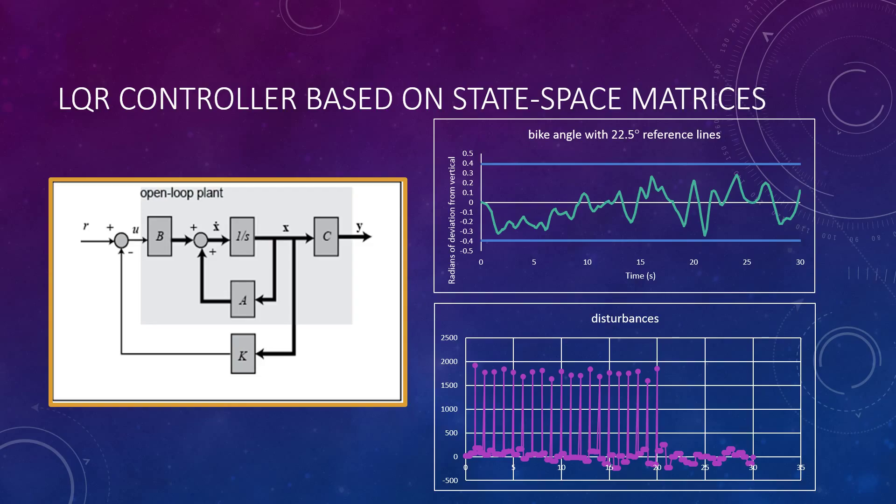So we went and we found some information on what's called a linear quadratic regulator controller. It's based on state space matrices and it's a model predictive controller. And so on the left you have a basic diagram of how the controller works. The matrices, or the blocks that say A, B, and C are the A, B, and C matrices in state space form. The block labeled 1 over S is simply an integration form in Laplace space. And the bottom block there, K, is essentially the controller.